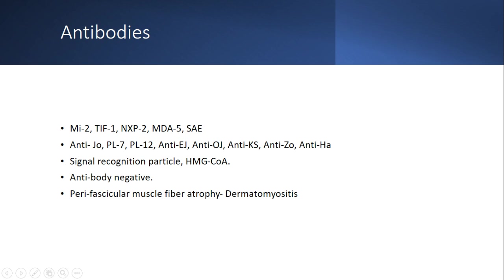The antibody panel includes dermatomyositis-specific antibodies listed at the top, followed by antisynthetase antibodies — notably anti-Jo-1. Signal recognition particle (SRP) and HMG-CoA reductase antibodies indicate statin-induced myopathy within the immune necrotizing myopathy group, confirmed on muscle biopsy. Without a positive antibody and very high CPK, muscle biopsy is essential. In dermatomyositis, LDH is elevated disproportionately to CPK, and biopsy shows perifascicular muscle atrophy.